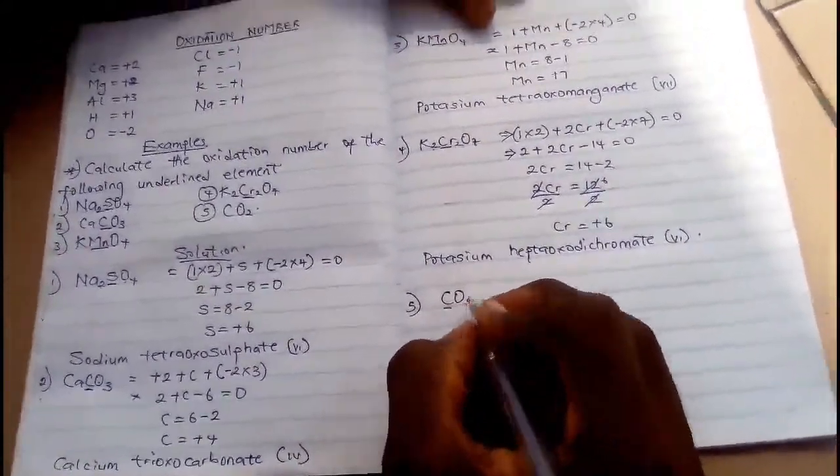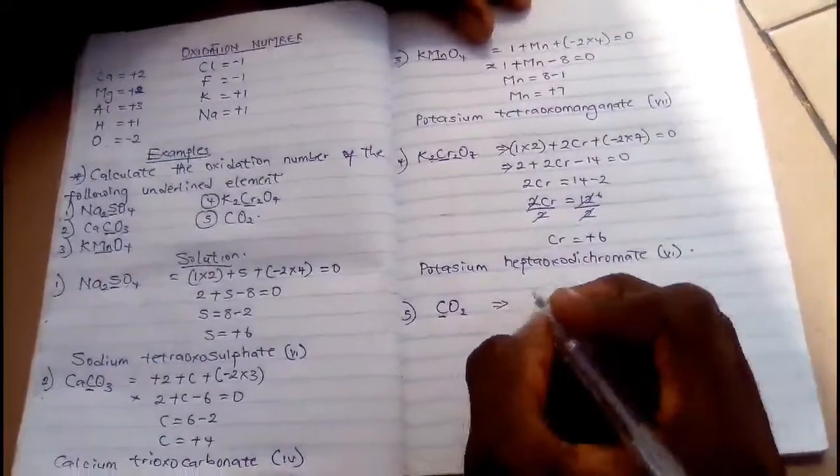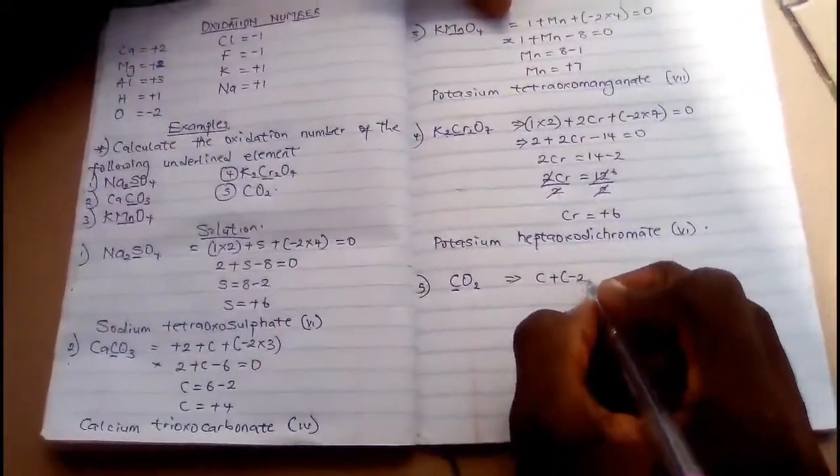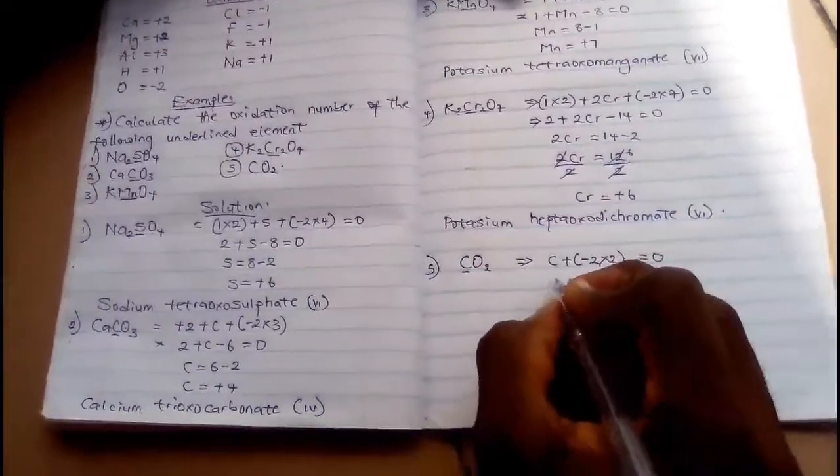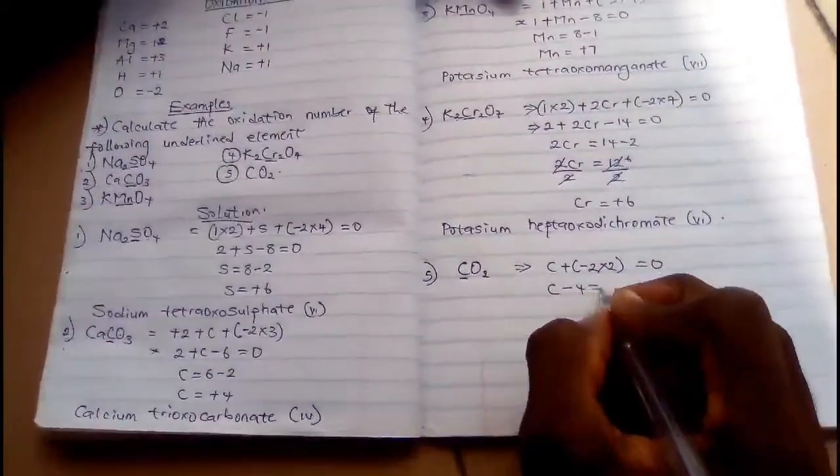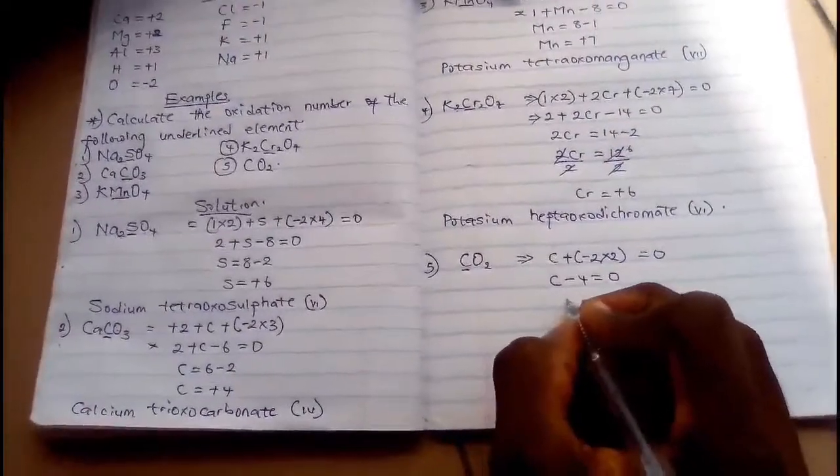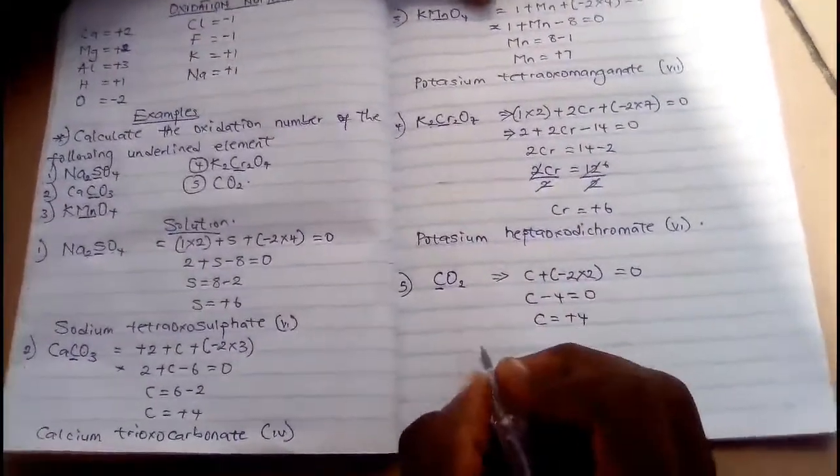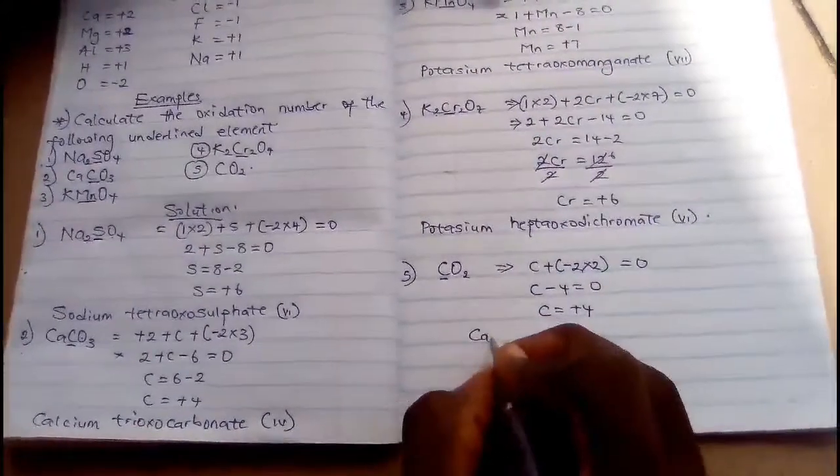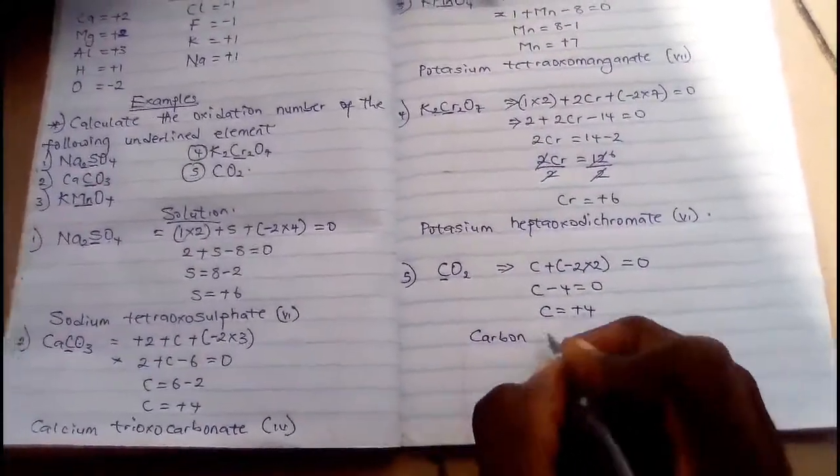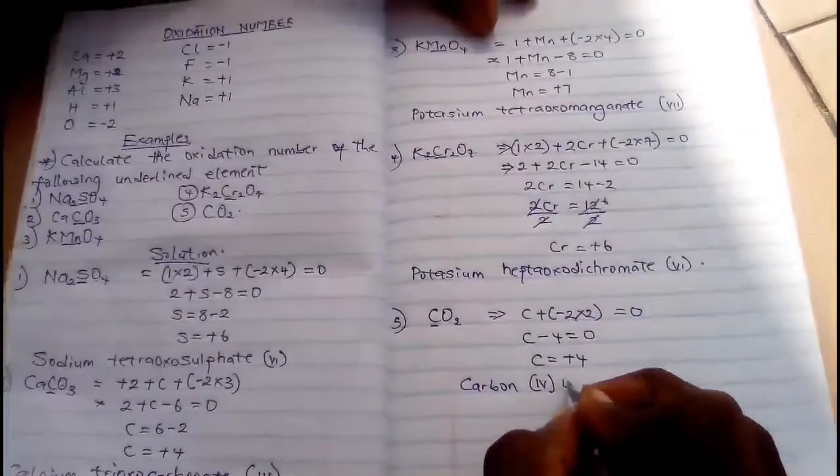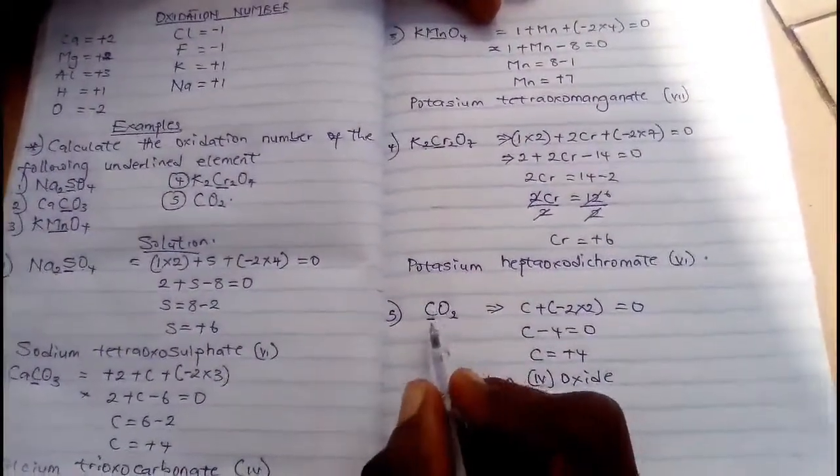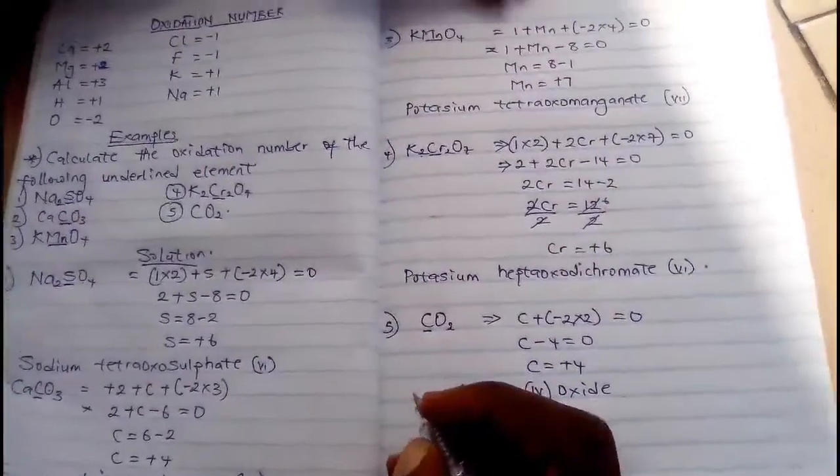Let me give you the last one, which is CO₂. We are looking for carbon. Carbon is unknown, oxygen is -2 times 2 = 0. Then C - 4 = 0, then if we collect like terms, C = +4. Then the IUPAC nomenclature for this is carbon tetra-oxide.